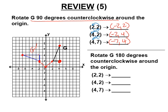Rotate G 180 degrees counterclockwise around the origin — I didn't need to say counterclockwise since 180 is the same either way. You've already done 90, so just do another 90. At 180 degrees, the coordinates just become their opposites — no switching of positions. Two, two goes to negative two, negative two. Four, two goes to negative four, negative two. Four, seven goes to negative four, negative seven.